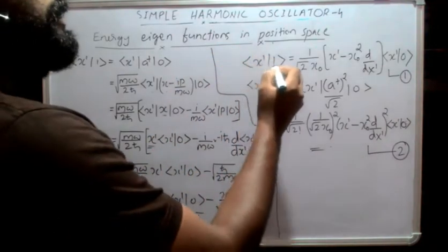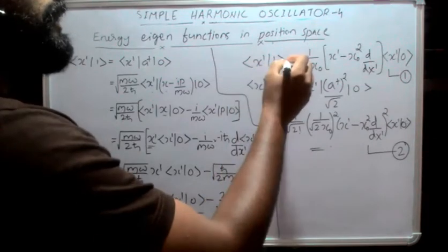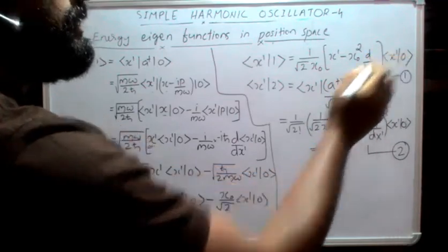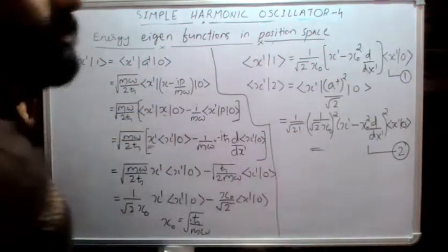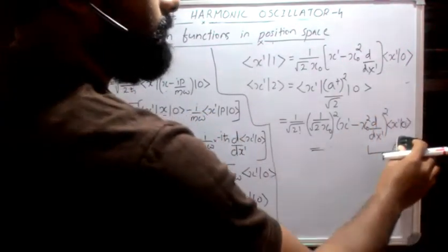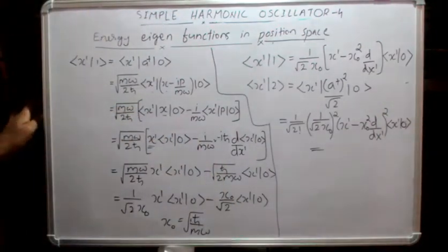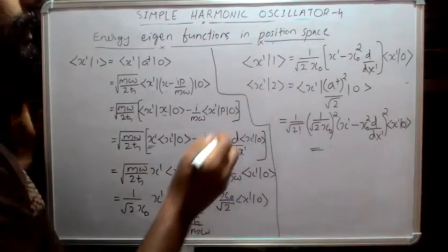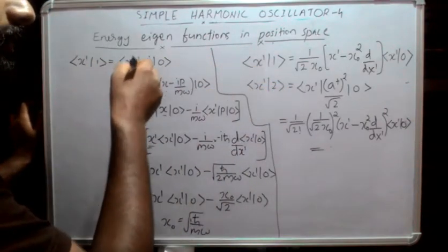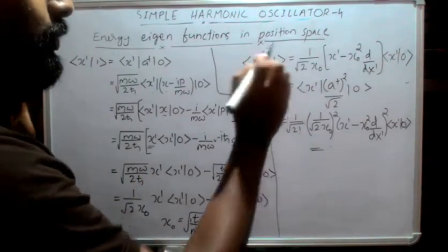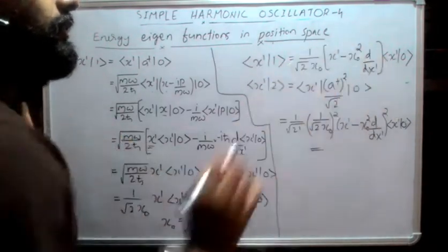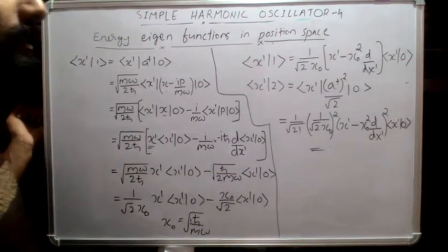So the first excited state energy eigenfunction is ⟨x'|1⟩ = 1 over under root 2 x₀ times (x' - x₀² d/dx') ⟨x'|0⟩. Similarly, the next level eigenfunction can be developed the same way, since |2⟩ = (a†)² over under root 2, as derived in previous classes.